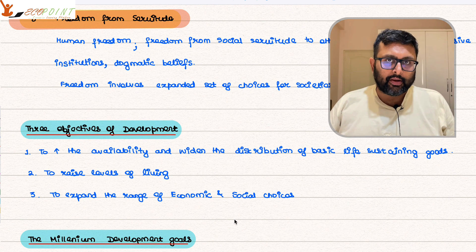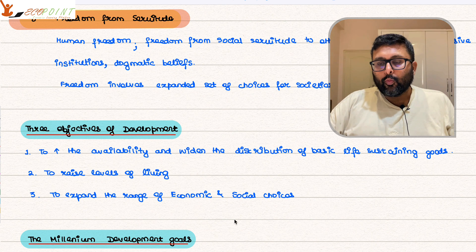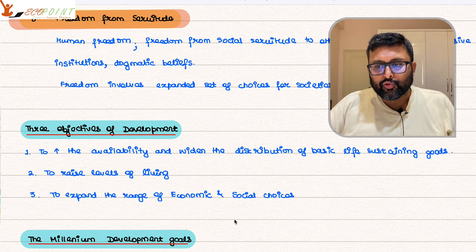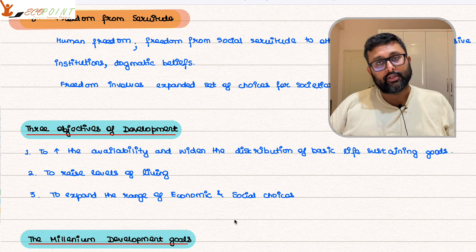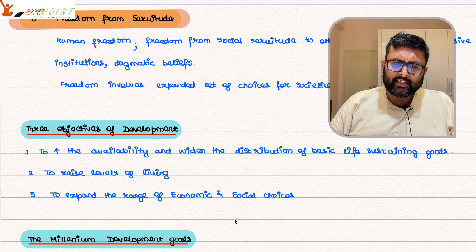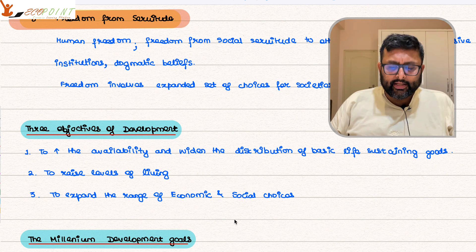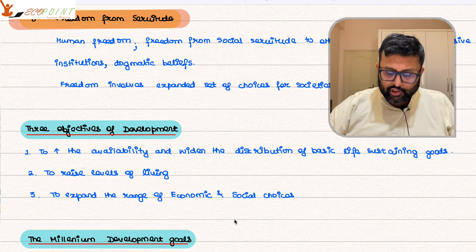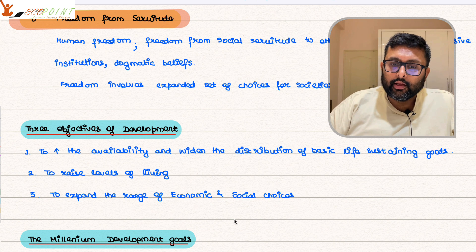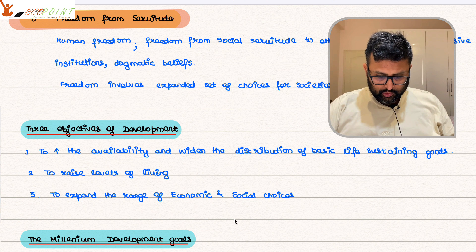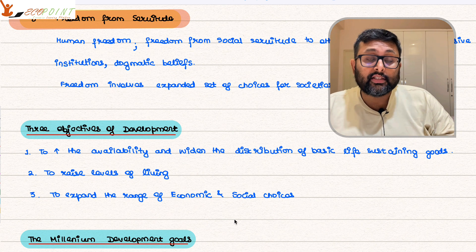When you convert these core values of development into objectives, what are the three objectives of development? First, development should increase the availability and distribution of basic life-sustaining goods — food, shelter, health, sustenance. Second, to raise the levels of living, so people should have better jobs, better education, and greater attention to cultural and human values. Third, to expand the range of economic and social choices — do you have a choice in going for the employment you really want?